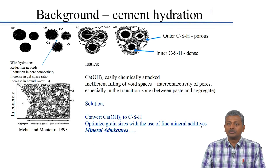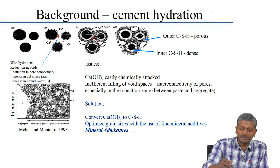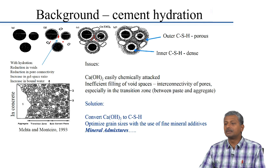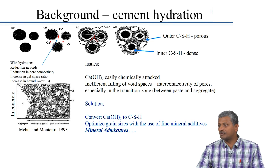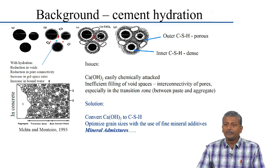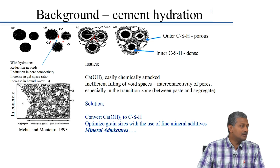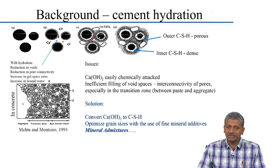Just to briefly rekindle the background on cement hydration: with progressive hydration, the space between cement particles starts getting filled up with hydration products like calcium silicate hydrate, calcium hydroxide, AFt and AFm phases, ultimately developing the microstructure of the cement paste with different types of CSH products — inner CSH and outer CSH. There is greater porosity in the outer CSH, but with more hydration much of this porosity gets filled up, reducing the interconnectivity of the pores. In the long term you get a durable system because your pores are highly discrete and not interconnected, depending on the extent of hydration happening in the system.